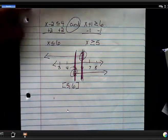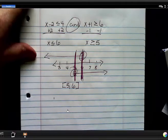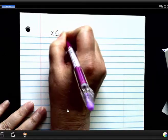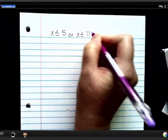So let's look at a union. A union is when you have both sets together. So let's say that I had x is less than or equal to 5 or x is less than or equal to 11.